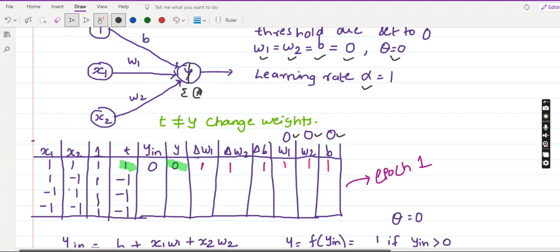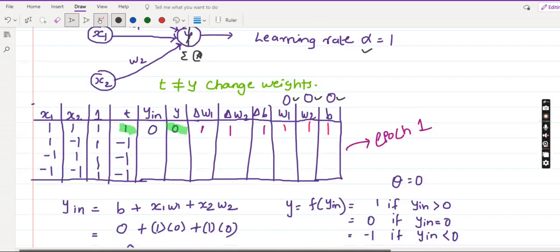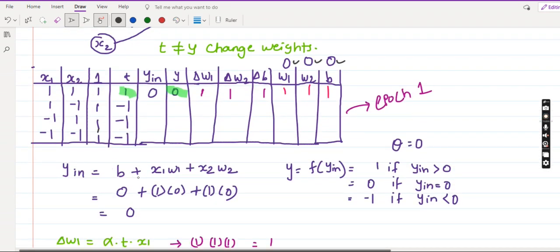I have x1, x2, I know all the four different values, I know the target value also. The first thing that I'll do is I'll calculate y_in. How do you calculate y_in? You know the equation: y_in is equal to bias plus x1w1 plus x2w2. All the weights and bias are initially 0. x1 here is 1, x2 is also 1. So I'll calculate y_in. y_in is 0.